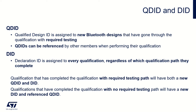For example, if a Bluetooth member manufactures a Bluetooth module that can be used in a consumer product created by other members, the module manufacturer may qualify their module through the qualification with required testing path as an end product type. They will obtain a QDID assigned to their module, which can be provided to members that purchase the module. Those members will then be able to qualify their product via the no-required-testing path by referencing the end product QDID provided by the module manufacturer.